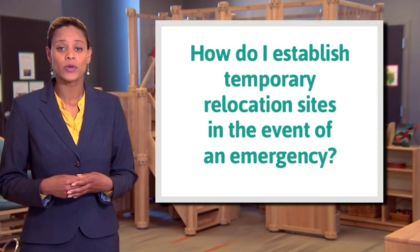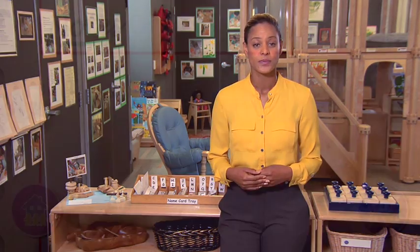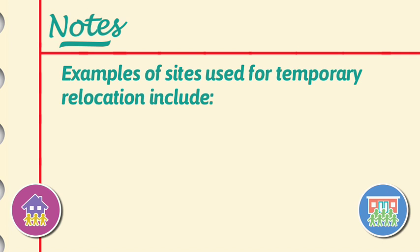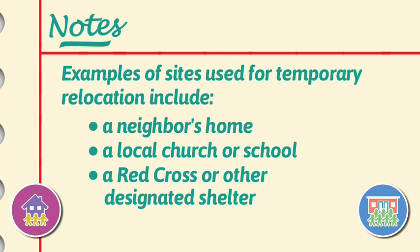How do I establish temporary relocation sites in the event of an emergency? You should have identified and received advanced permission to use relocation sites. Licensing requires at least two. It is best practice to have one within easy walking distance from your facility, and a second one in case the first site isn't available. Some examples of sites used for temporary relocation include a neighbor's home, a local church or school, or a Red Cross or other designated shelter. The families of every child in your care should be informed in advance of where your relocation sites are, since it may be impossible to contact families directly during an emergency.